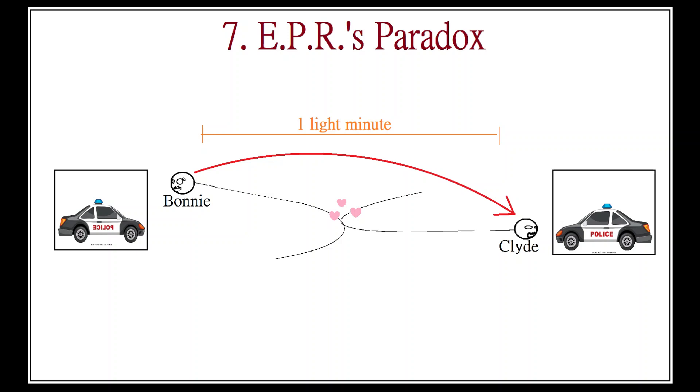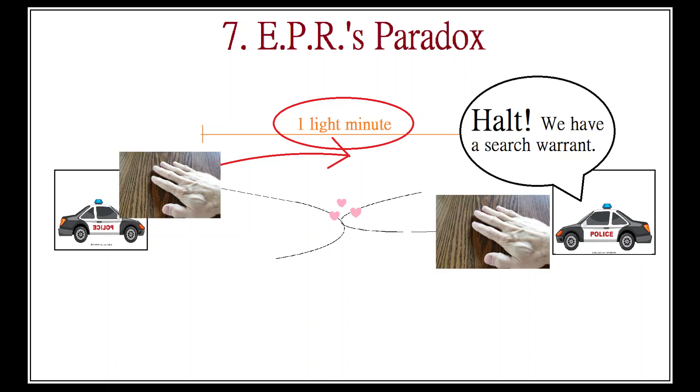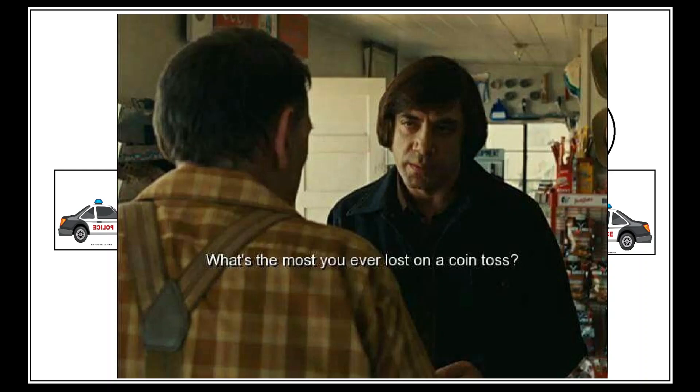That message, signal, or cause effect, whatever it is, cannot go faster than the speed of light. So it will take at least a whole minute to reach Clyde. But Clyde is being measured right now. He doesn't have time to wait a whole minute for a message. He has no choice but to guess at Bonnie's value and then do the opposite. But if he guesses wrong, then conservation will be violated and the universe will explode and we'll all die. So sad.